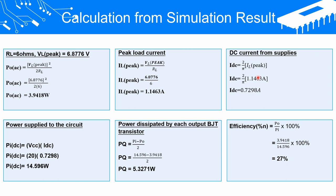Next, the input power is found by substituting VCC and IDC, giving 14.596 watts. The power dissipated is calculated using the input power and output power in the formula, giving 5.3271 watts. Lastly, efficiency equals output power divided by input power multiplied by 100, giving an efficiency of 27%.